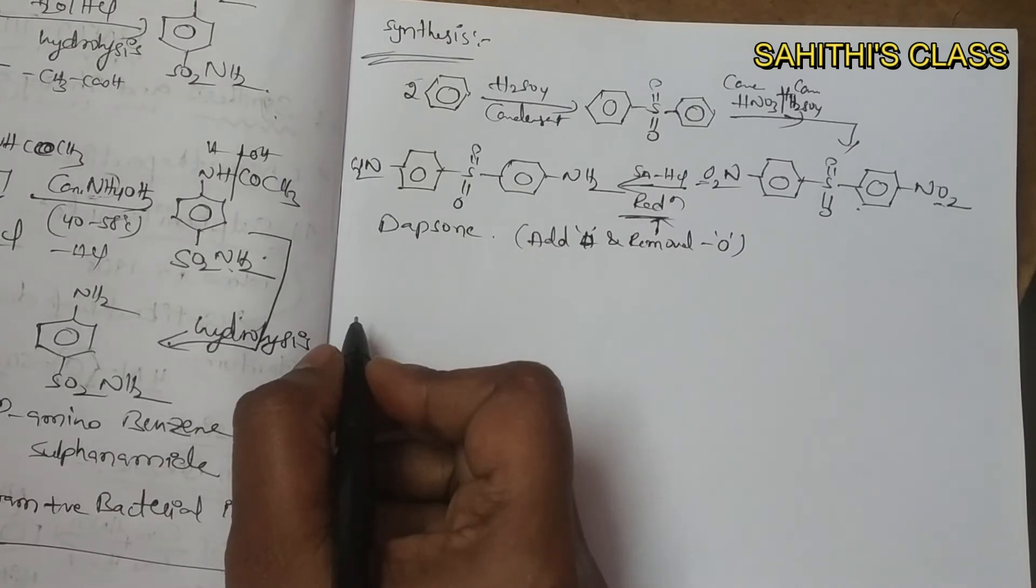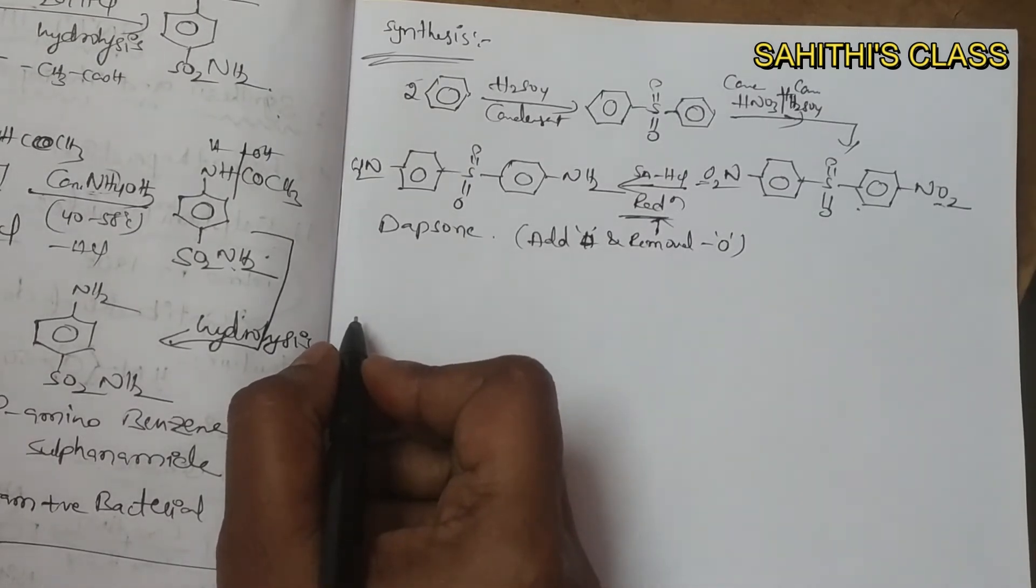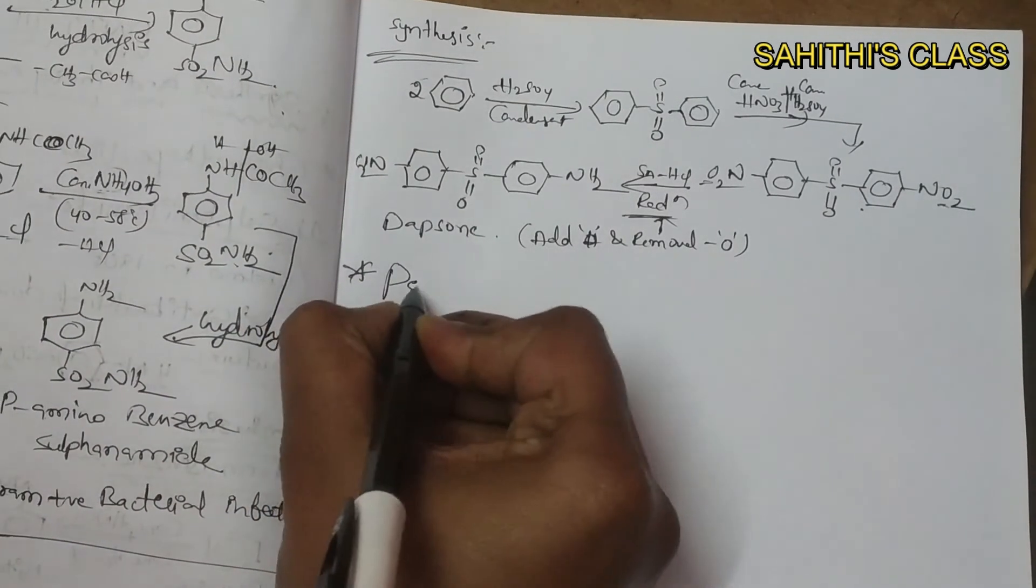And also used for the treatment of nocardiasis. It has also been used successfully as a suppressant in the treatment of dermatitis herpetiformis. The next topic is penicillin.